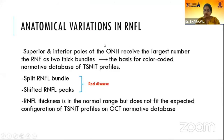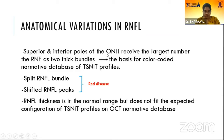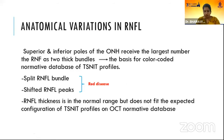Anatomical variations in RNFL bundle are the most common cause of red disease. Normally, superior and inferior poles of the ONH receive the largest number of RNFL as two thick bundles, which forms the basis for the color-coded normative database of TSNIT profiles. The two anatomical variations that can be seen are split RNFL bundle and shifted RNFL peaks. The RNFL thickness is in the normal range but does not fit the expected configuration of TSNIT profiles on the OCT normative database, hence causing false positive results.